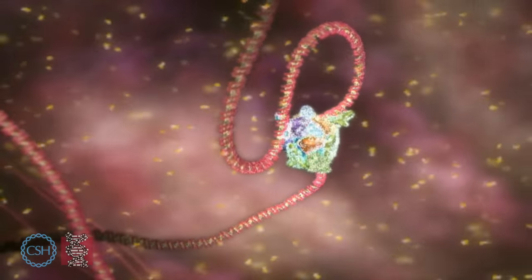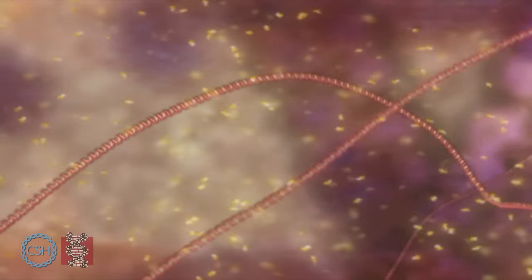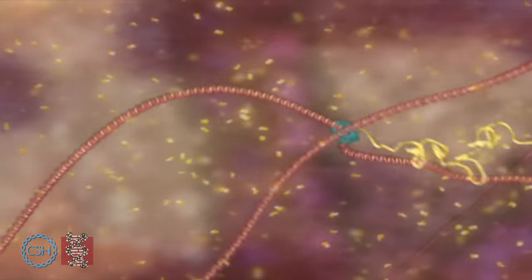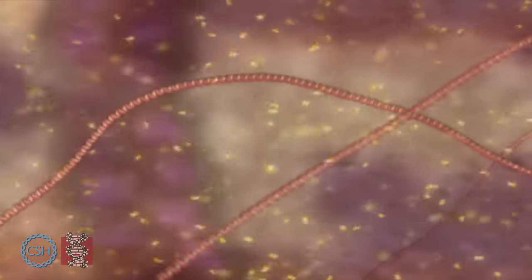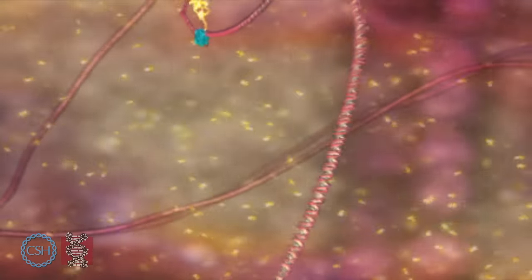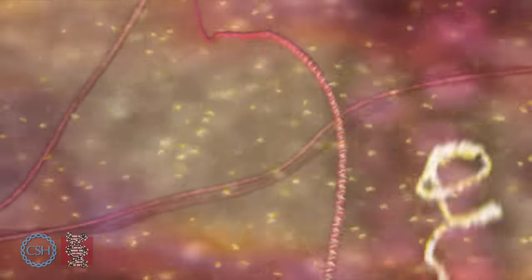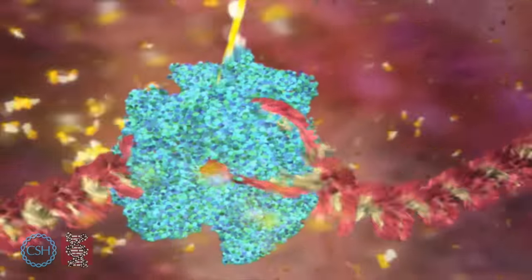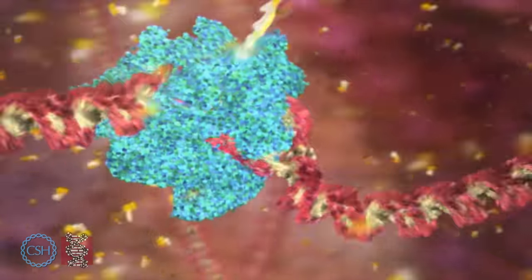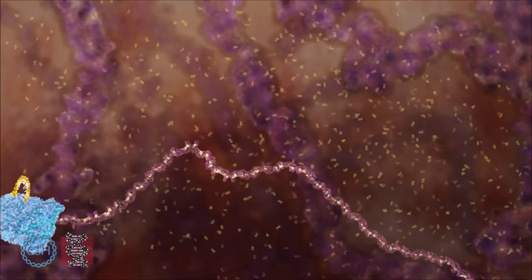The blue molecule is unzipping the double helix and copying one of the two strands. The yellow chain sneaking out of the top is a close chemical cousin of DNA called RNA. The building blocks to make the RNA enter through an intake hole. They are matched to the DNA letter by letter to copy the gene.